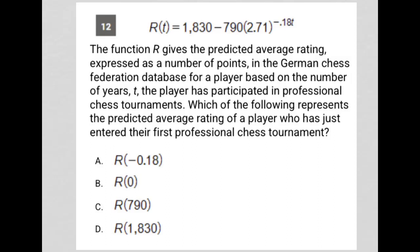This question is a translate word problem question — I say that just because of the length of the question. Typically a question of this length requires us to translate something in the word problem. We're also provided with this function here: r(t) equals 1830 minus 790 times 2.71 to the negative 0.18t power.